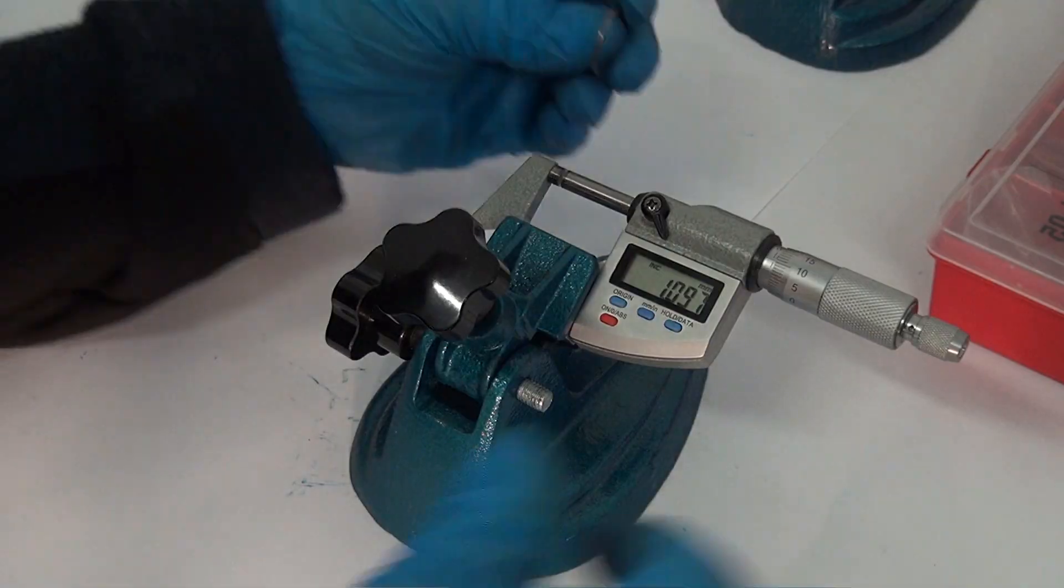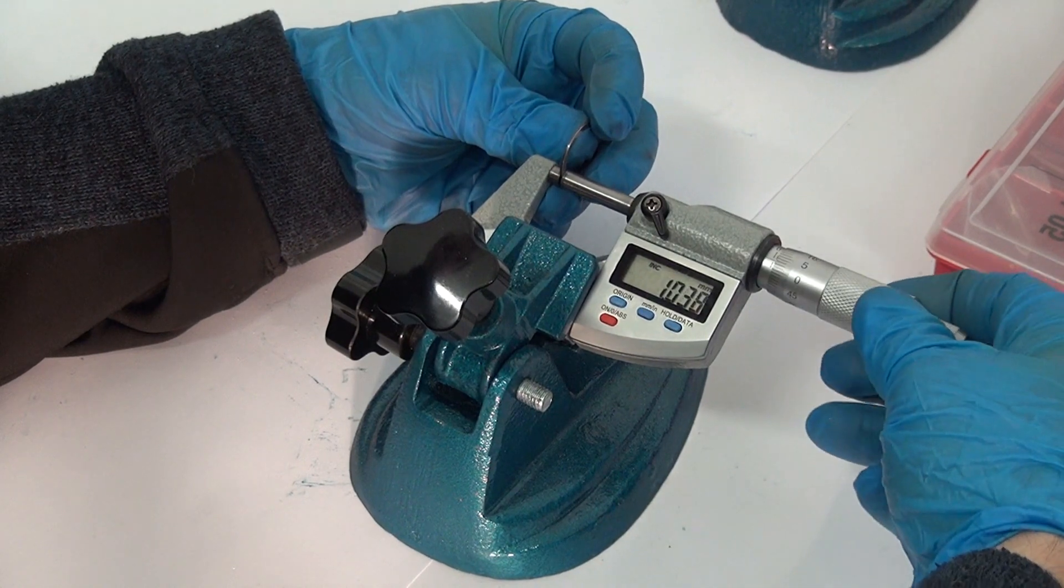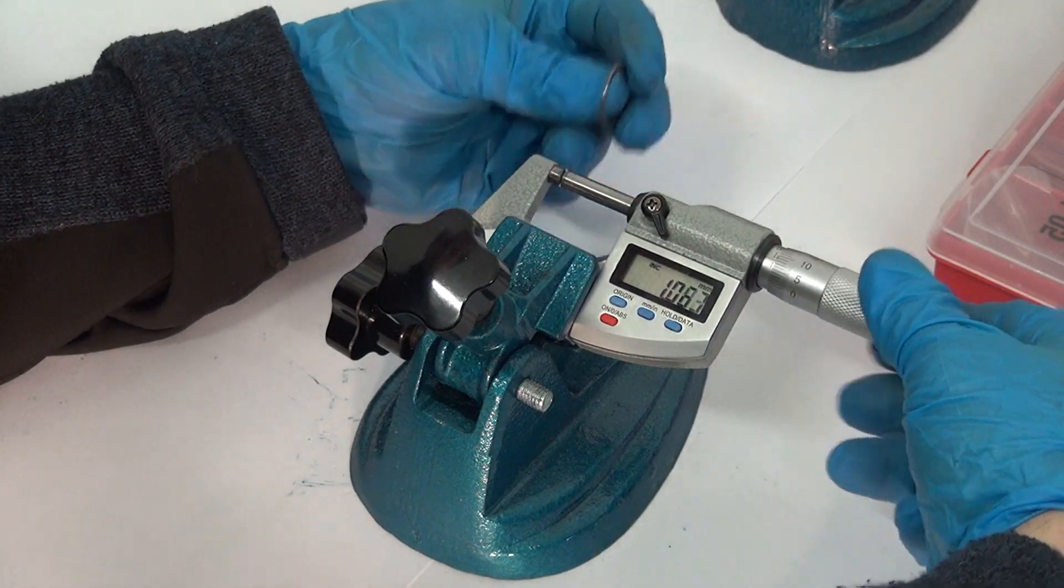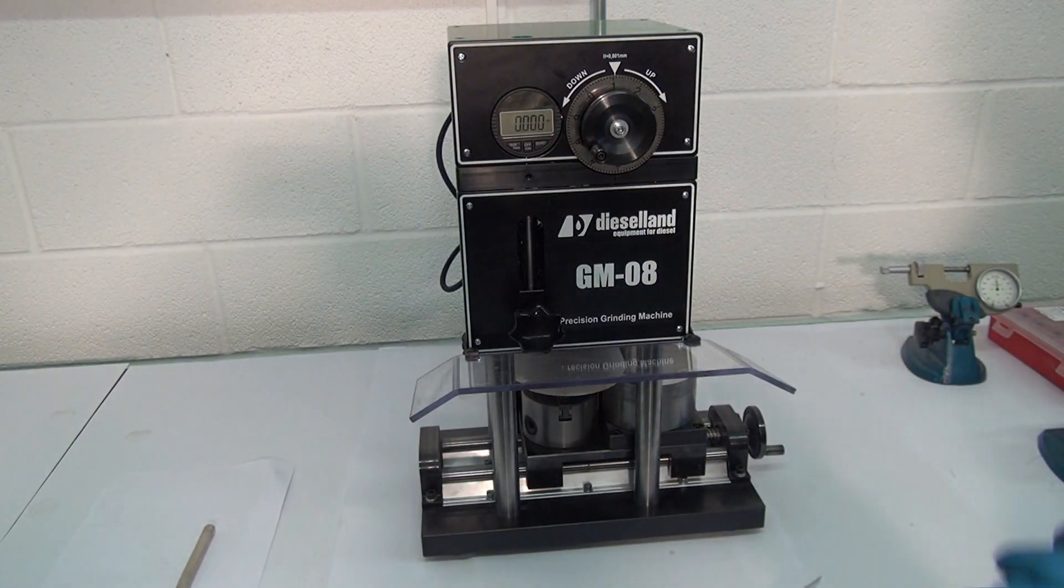After this, reset the indicator head, remove the washer and measure it, and determine the size after application of the stone. The new washer size is 1.023 millimeters.